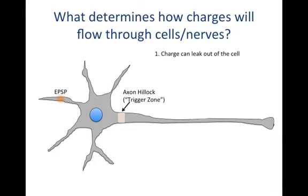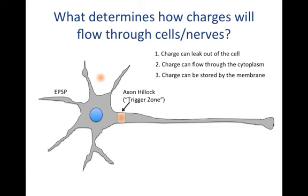There are three options. First, charge can leak right back out — it comes into the cell, flows a little bit through the cytoplasm, and leaks back out through an open channel. Second, the charge can flow through the cytoplasm, which is what we want: charges flowing down tissues to the axon hillock, reaching threshold voltage, and leading to an action potential. Finally, charge can be stored by the membrane — this is capacitance — where the charge stays near the membrane and does not progress any farther.